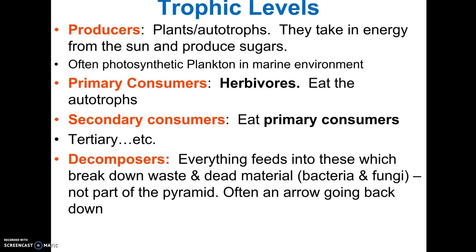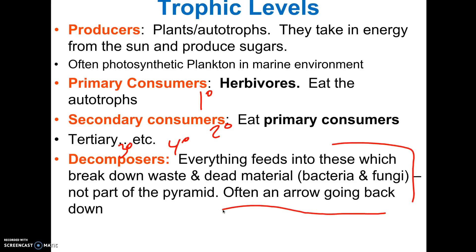Trophic levels are the levels in a food chain or food web. The producers are your plants, your autotrophs — they get energy from the sun, which is our ultimate energy source. The energy is then passed from the plants to the primary consumers who eat them, the herbivores. It's sometimes written as primary, secondary, tertiary — there can also be quaternary. And then the decomposers are what break everything down.